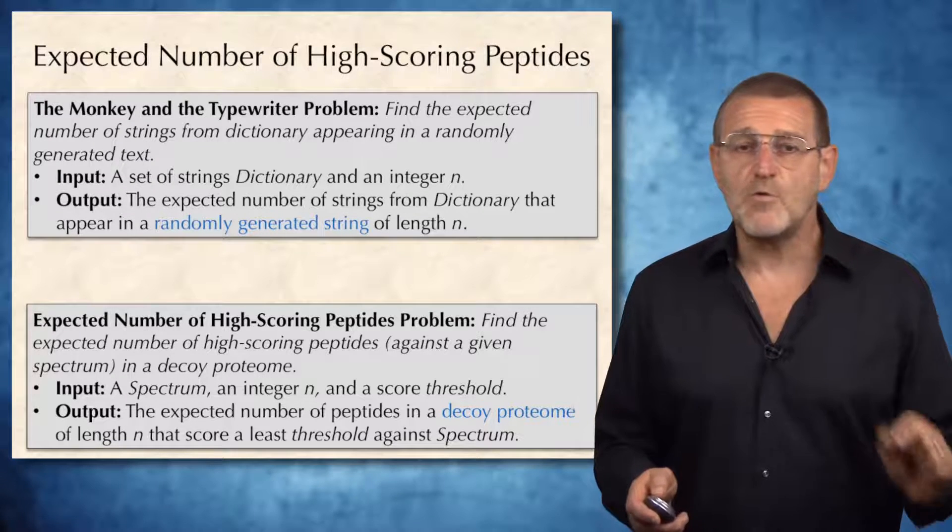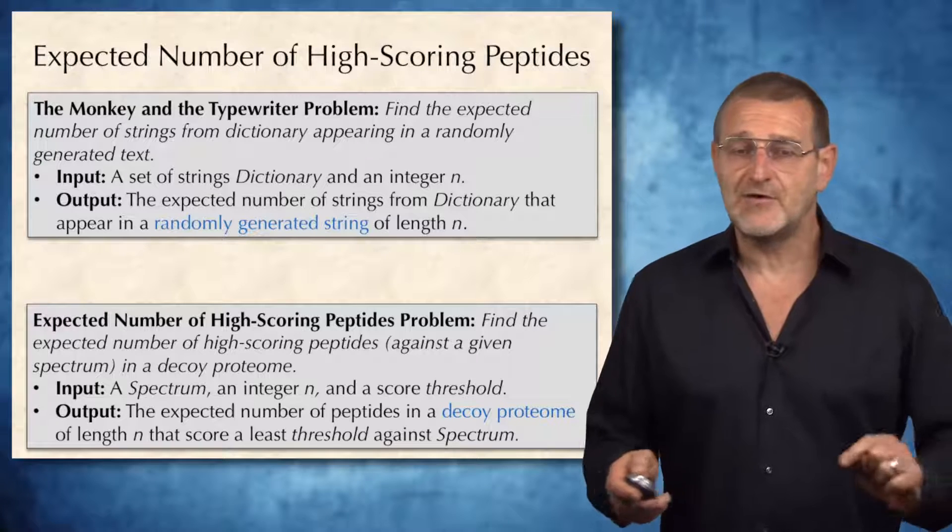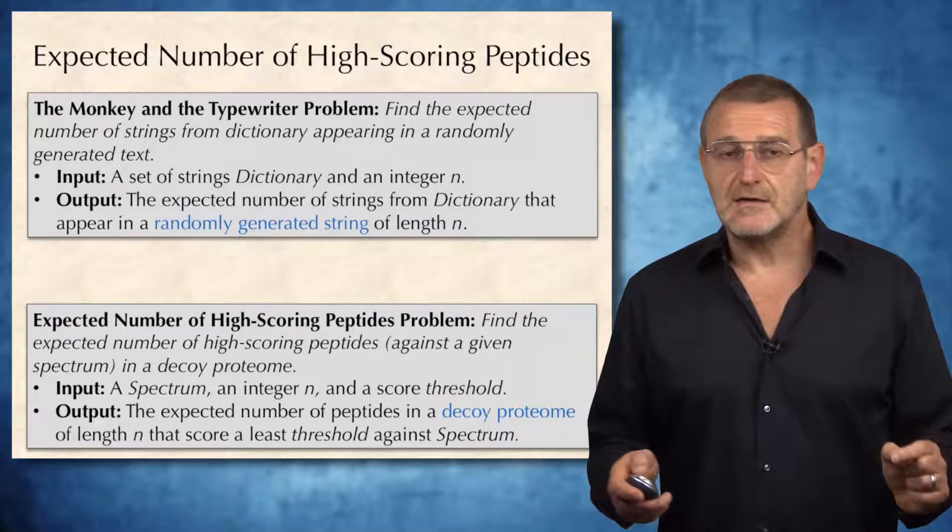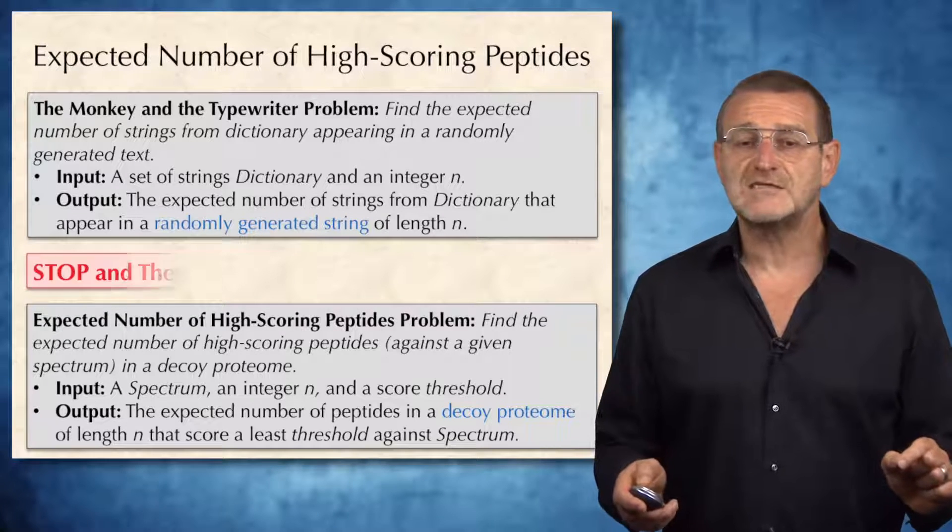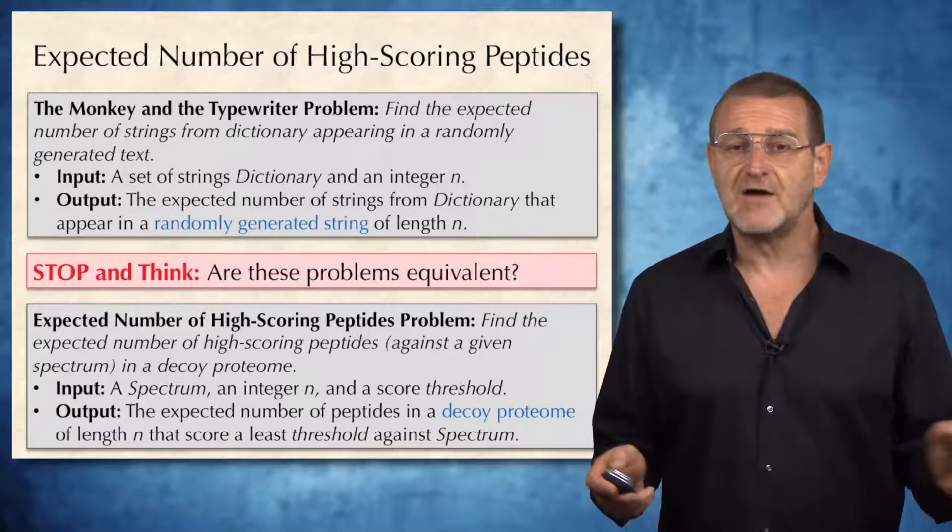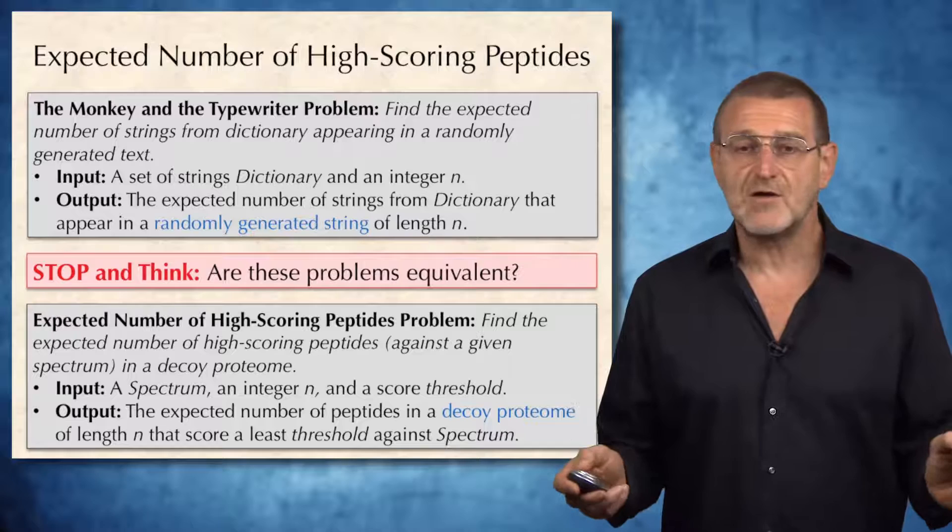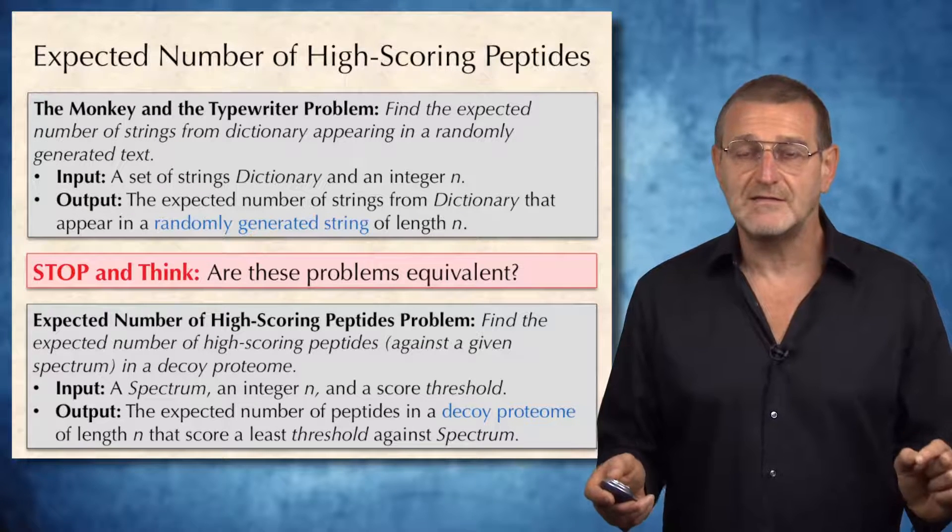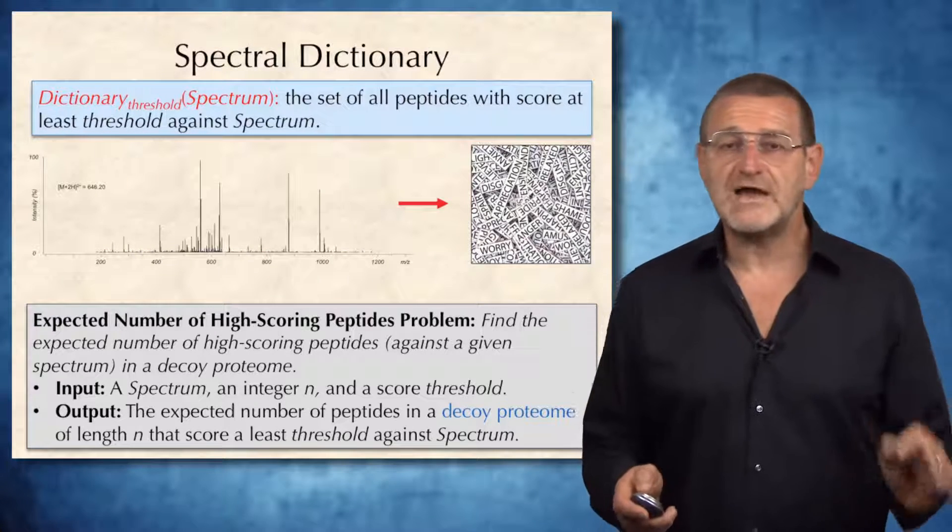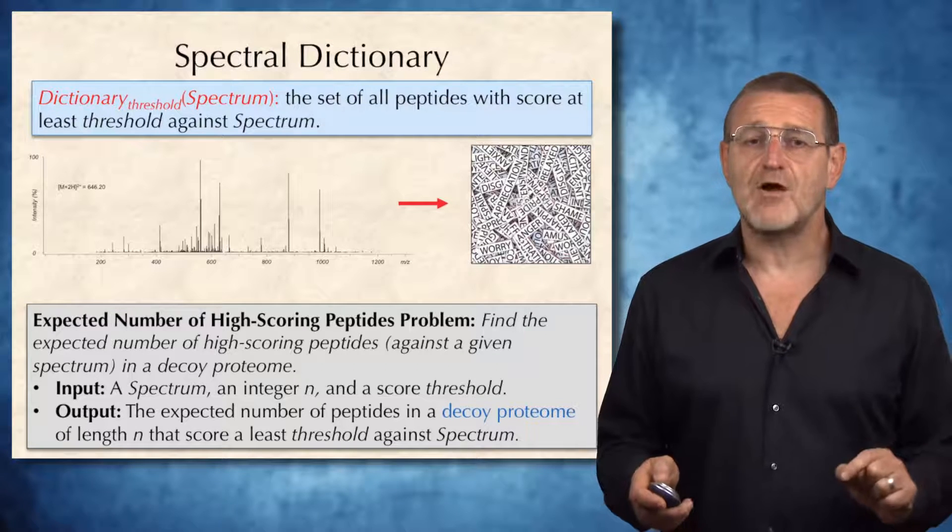You may be wondering what is the similarity or any relevance of expected number of high-scoring peptide problem and the monkey and the typewriter problem. And it is not clear that these problems are equivalent, but they are. To explain why this is actually the same problem, I will introduce the notion of spectral dictionary.